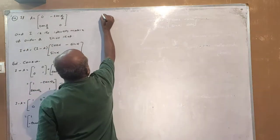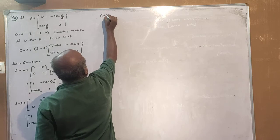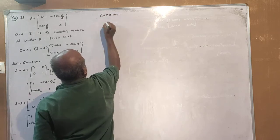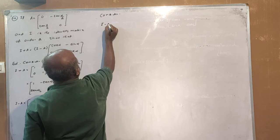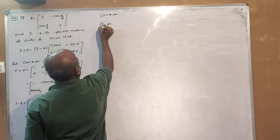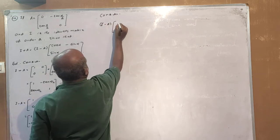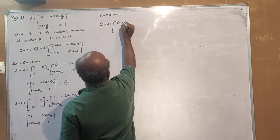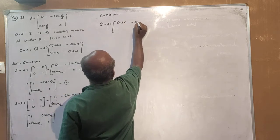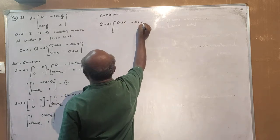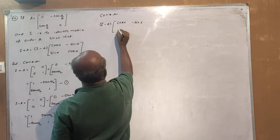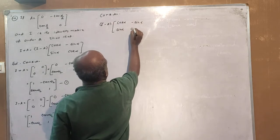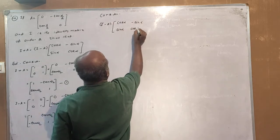Now consider the expression. Consider 1 minus tan(α) divided by 1 plus tan(α). Then consider 1 minus tan(α) by 1 plus tan(α). We want to show this equals cos(α).